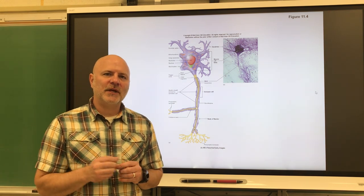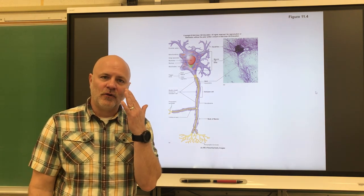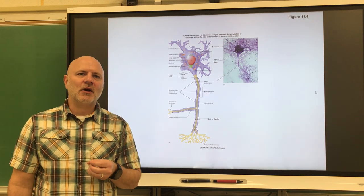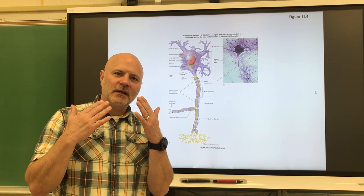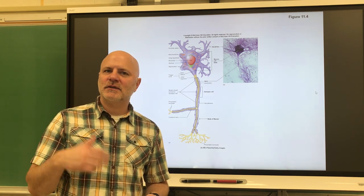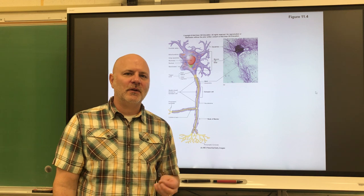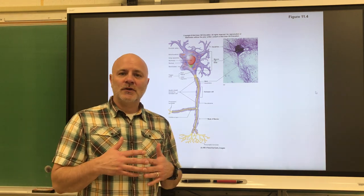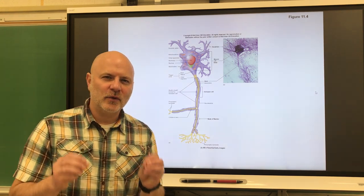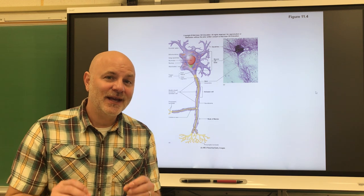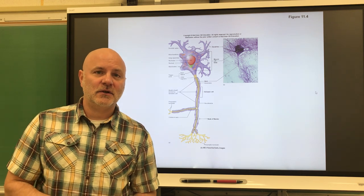There are a couple places in which we do have neurons that divide. One place is in your olfactory epithelium — you have olfactory neurons there that will replace over time, because we can smell things that can actually damage neurons there. Another place is in your hippocampus. Our hippocampus is one of the places in our brain where we store memories, so we have mitotic divisions occurring there that allow us to store more memories.